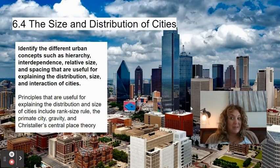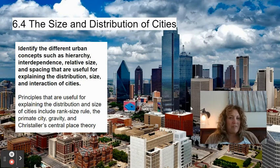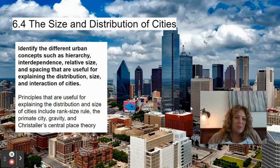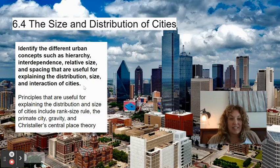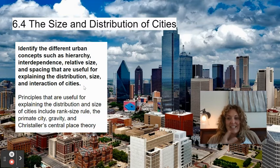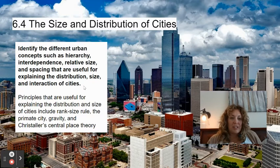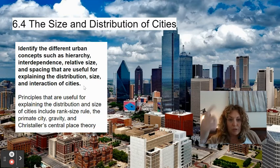6.4: Size and Distribution of Cities. Identify different urban concepts such as hierarchy, interdependence, relative size, and spacing that are useful for explaining the distribution, size, and interaction of cities. Principles include the rank-size rule, primate city, gravity model, and Christaller's central place theory. This unit is very model-heavy.